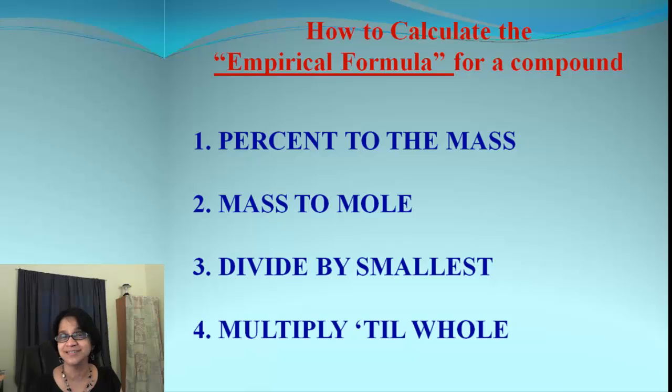And I like to sing this. How do I sing it? Percent to the mass and mass to the mole. Percent to the mass and mass to the mole. Divide by the smallest. Divide by the smallest. And then what? Then multiply, multiply till the whole. So we multiply till we get the whole number.